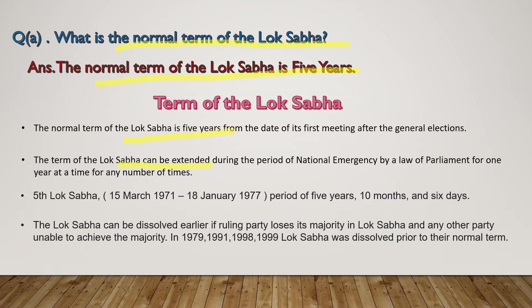It can be extended during the period of national emergency. For example, during the 5th Lok Sabha, the term was for the period of 5 years, 10 months and 6 days. Similarly, Lok Sabha can be dissolved earlier if the ruling party loses its majority in Lok Sabha and any other party is unable to achieve the majority. This happened many times — for example, in 1979, 1991, 1998, and 1999, the Lok Sabha term was dissolved prior to its normal term.